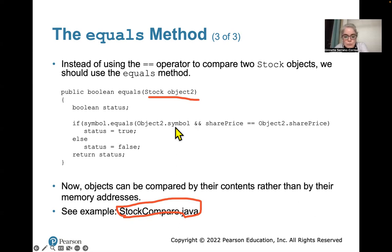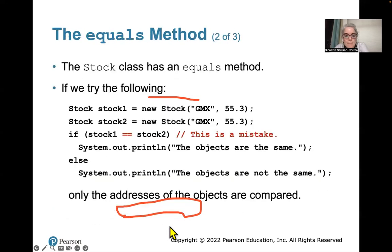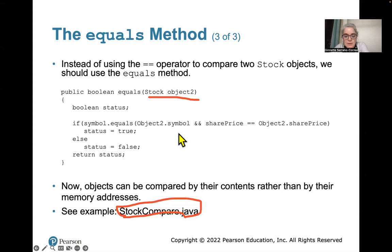It would be good to actually look at this Java file to see where sharePrice and symbol are coming from. Looking back — GMX right here is going to be the symbol of a stock; all stocks have a three-letter symbol. And now I know what these numbers are — this is the stock price. So symbol and price — we're looking at object2.symbol and sharePrice, and checking if that equals object2.sharePrice.